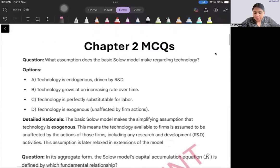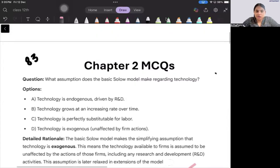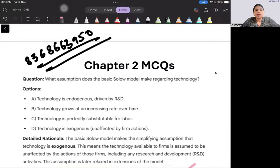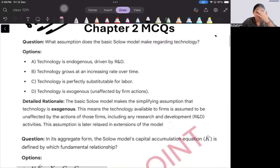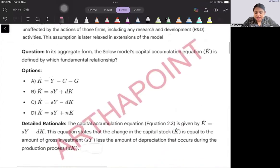Good afternoon everyone, now we will look at Chapter 2 MCQs. If you want this PDF, you can contact Rohit sir on 836-86-63950. Let's look at the first question: what assumption does the basic Solow model make regarding technology? We assume technology is constant or determined outside the model, so the answer will be D.